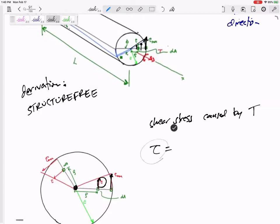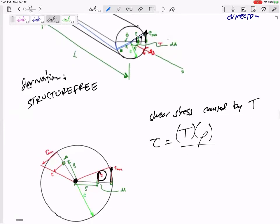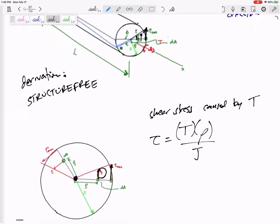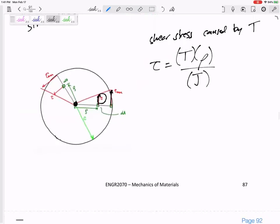What would the magnitude of this shear stress be? We could think about a few things. The larger the T, the larger the shear stress you would feel. And then this rho is how far you are away from the center of the cross section. And then we're going to divide it by J. J is the polar moment of inertia.